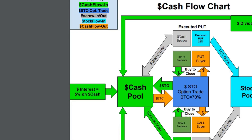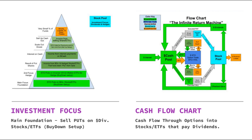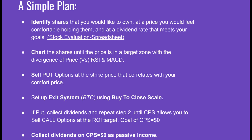Cash went into escrow. The buyer of the put premium came into cash. I purchased the contract back. Some small percent went back to the buyer of the put. My escrowed cash came back into my pool and then began collecting an additional 5% from that point on. In the next video, I'll discuss what happens if I am put the shares. This execution of being put the shares occurs approximately 25% of the times that I initiate a sell-to-open contract.